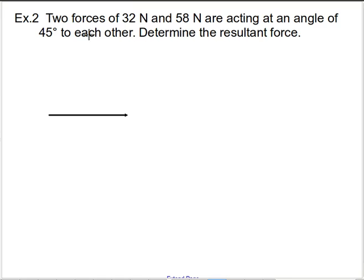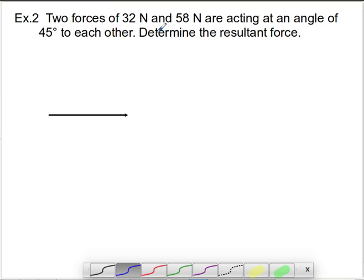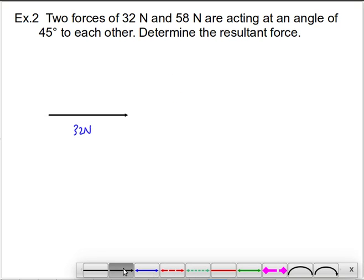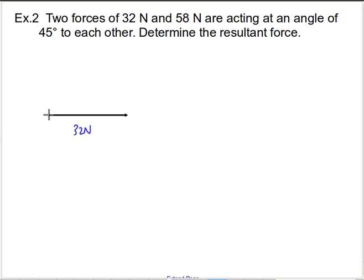We're told we have two forces. The first one is 32 newtons — I'm going to choose 32 newtons and lay it along the horizontal in the positive x direction. Then my second force acts at an angle of 45 degrees, and that one is 58 newtons.